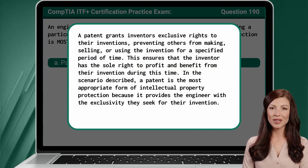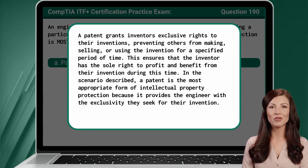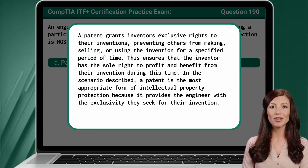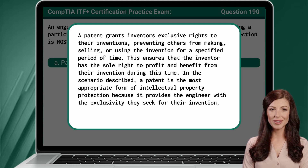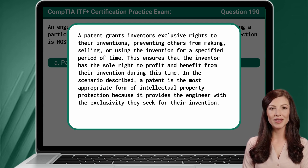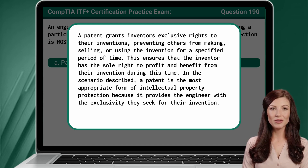A patent grants inventors exclusive rights to their inventions, preventing others from making, selling, or using the invention for a specified period of time. This ensures that the inventor has the sole right to profit and benefit from their invention during this time. In the scenario described, a patent is the most appropriate form of intellectual property protection because it provides the engineer with the exclusivity they seek for their invention.